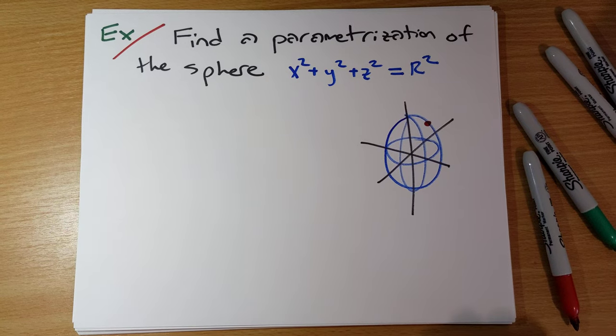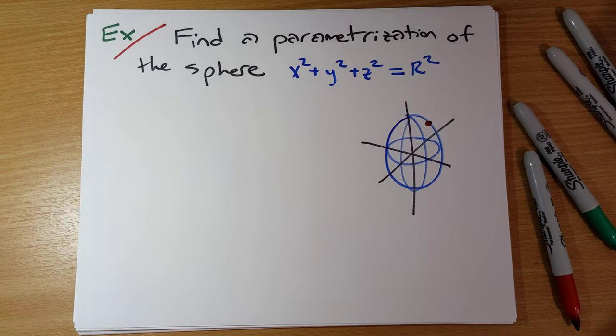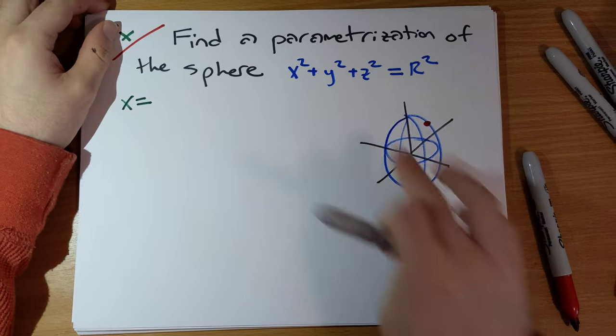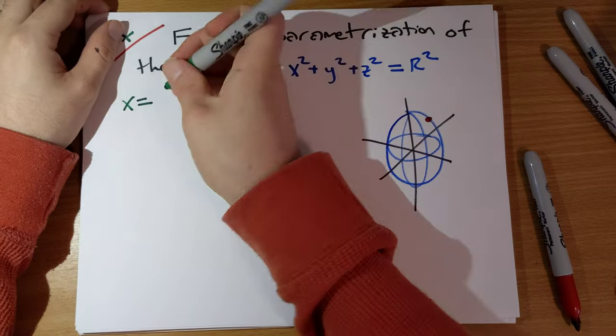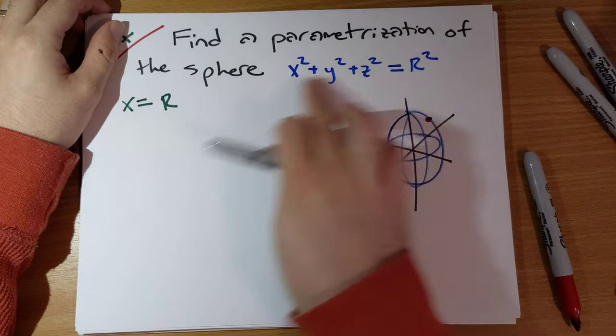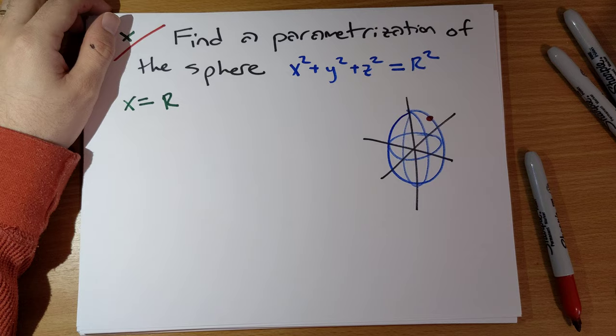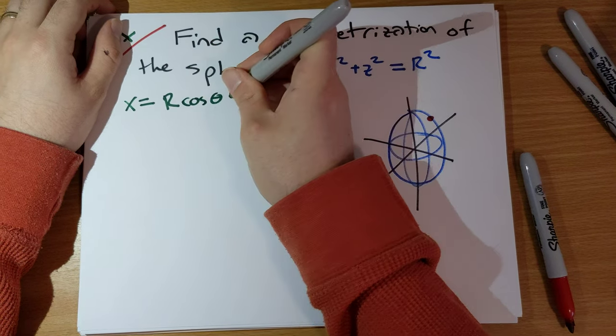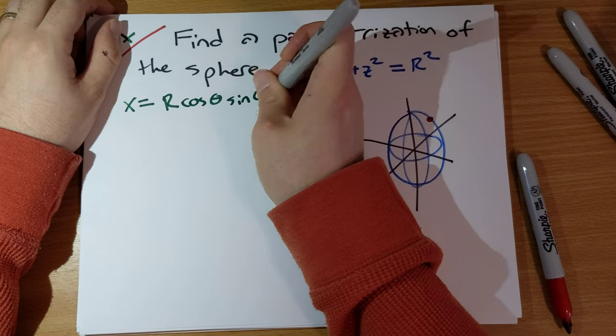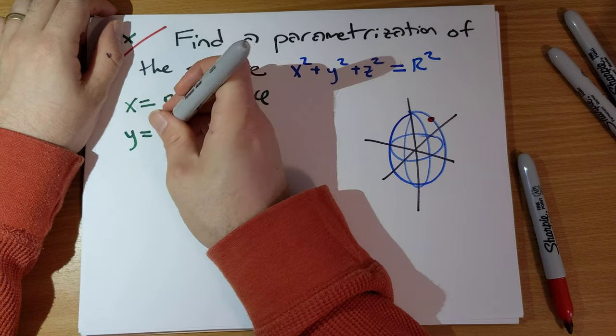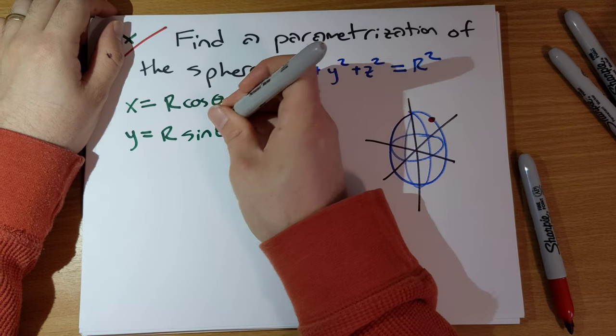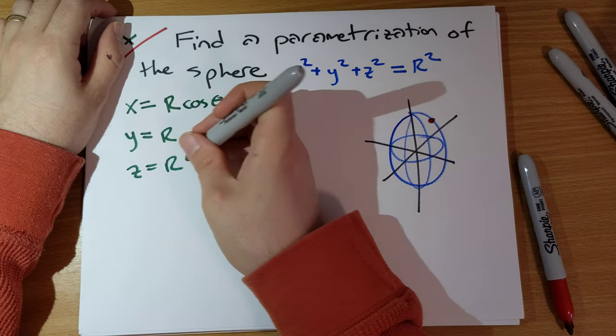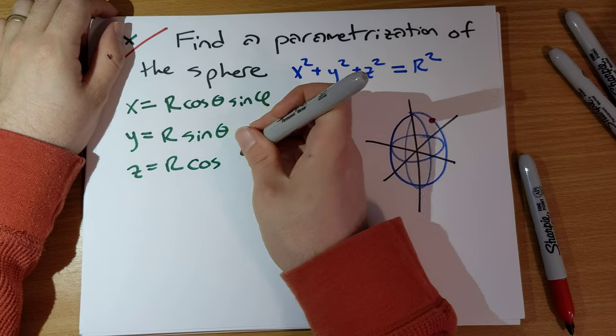So think back to the previous chapter when we did spherical coordinates. We should know that x is equal to, in this case, R. Big R here is going to be the radius of the sphere. R times cosine theta times sine phi. Y is equal to R times sine theta times sine phi. And z is equal to R cosine phi.